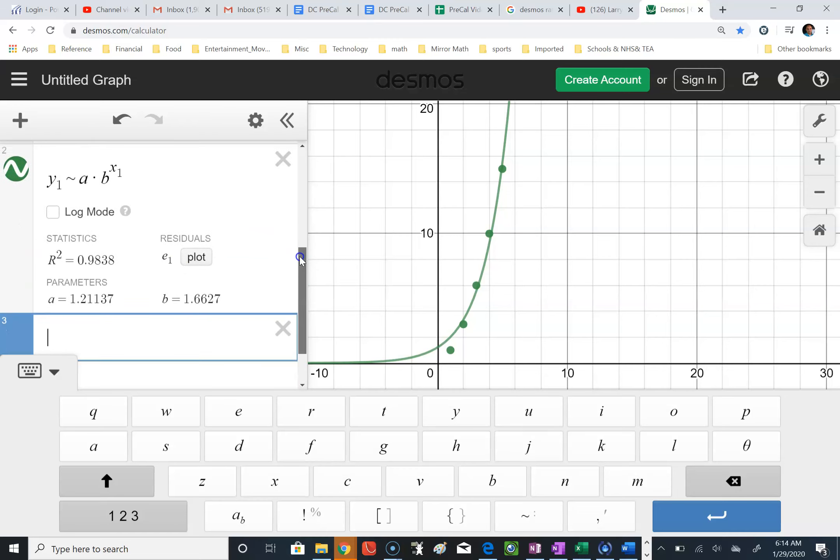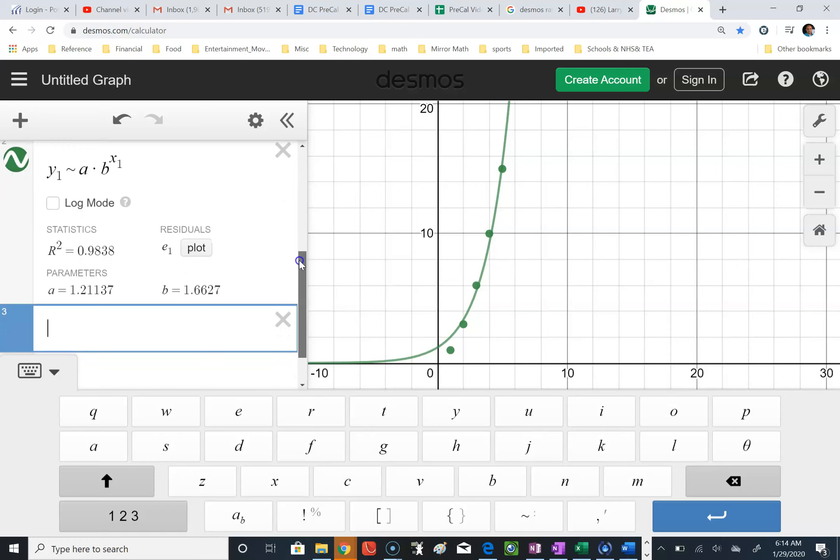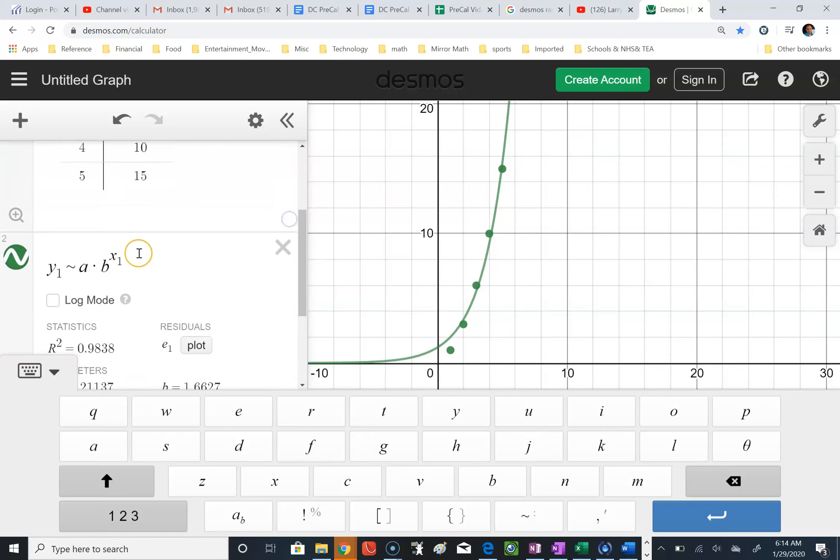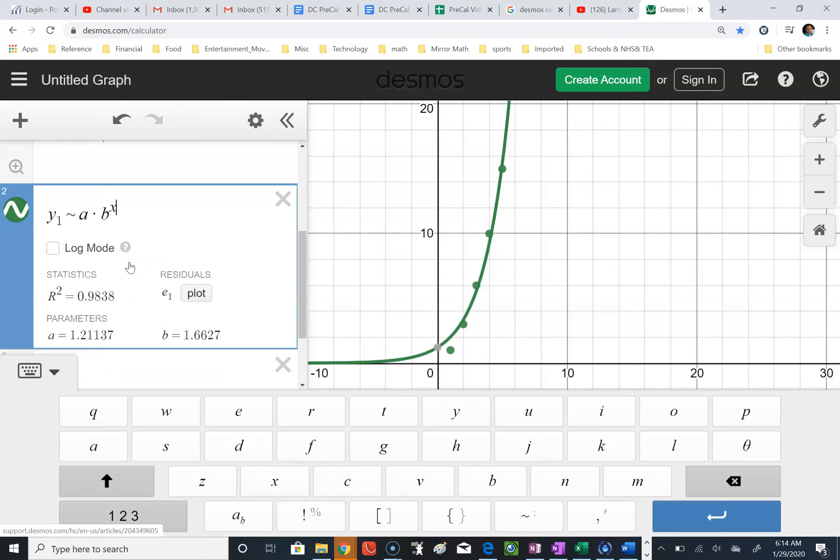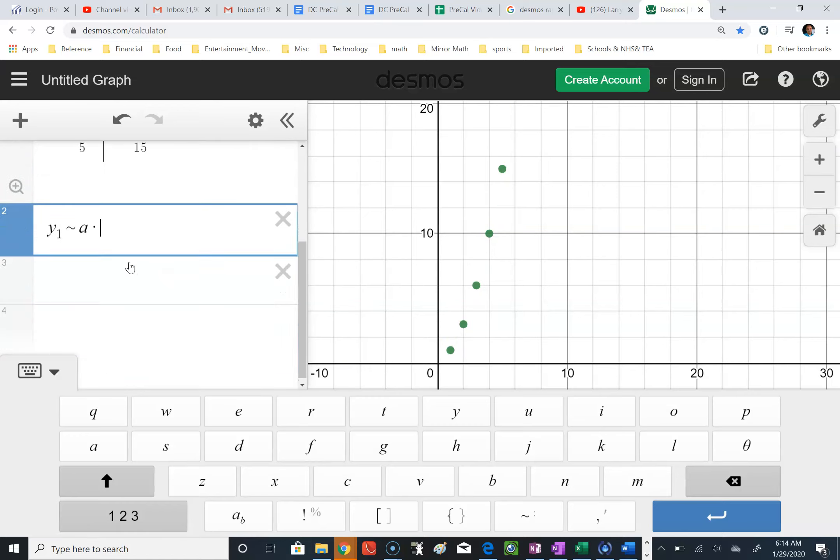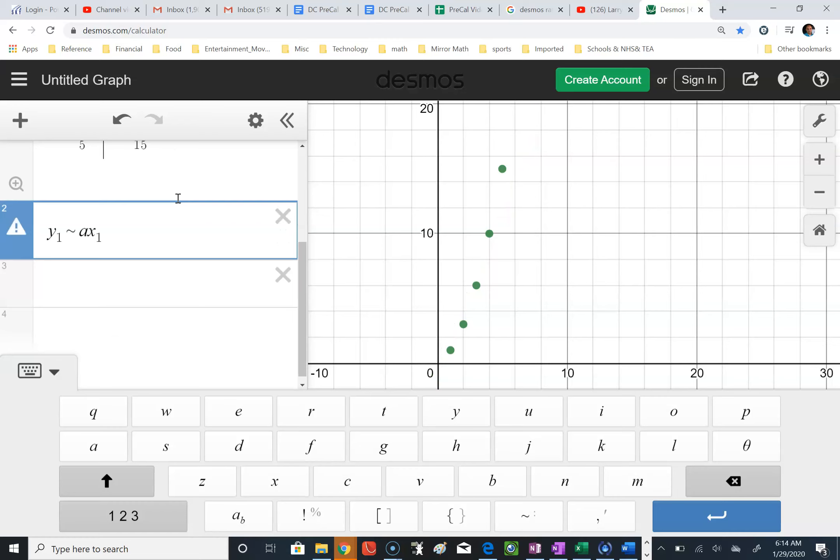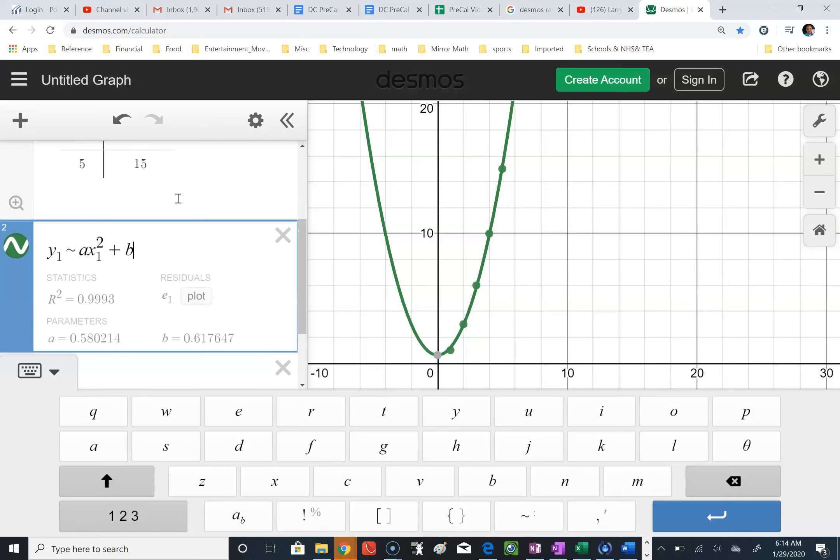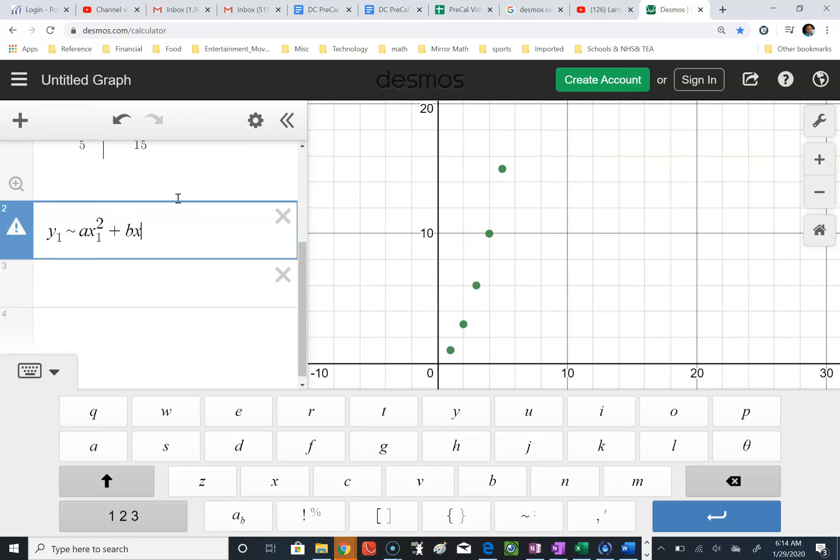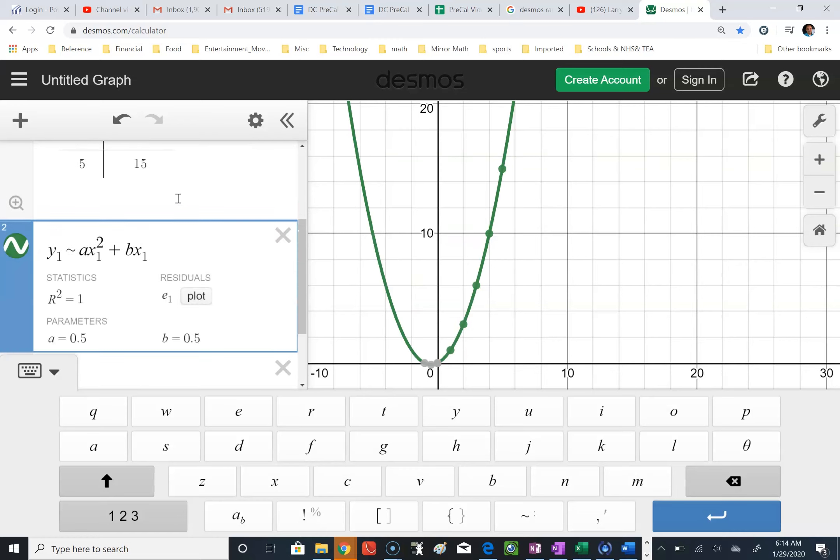So doing the same thing, backing it up, and I'm going to type in a quadratic model. So a x sub 1 quantity squared plus b x sub 1 plus c.